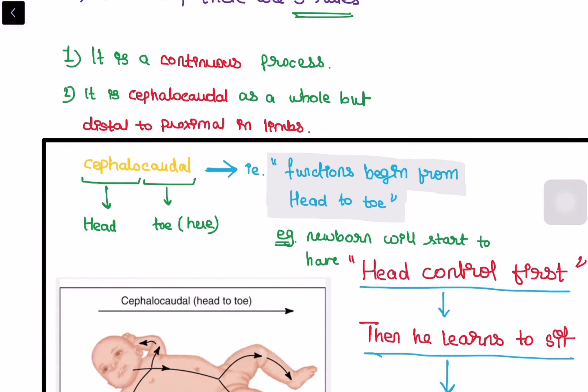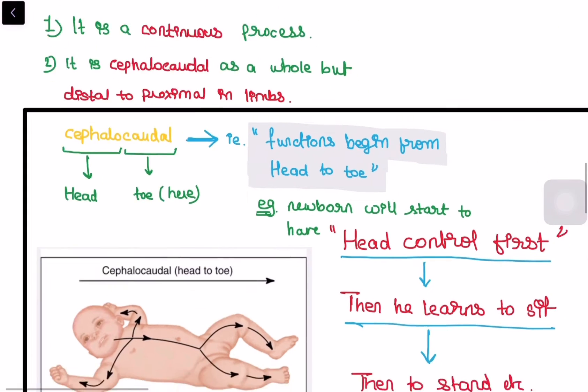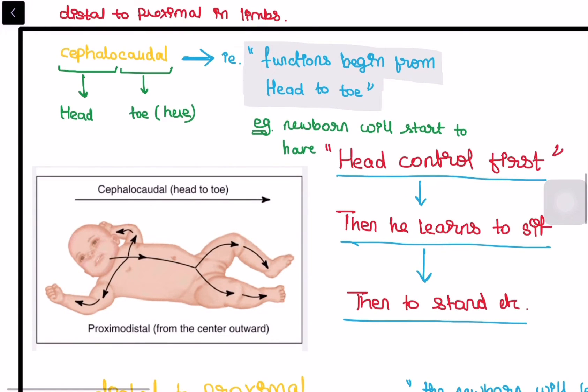Now for example, newborn will start to have the head control first, then he will learn to sit, then he will learn to stand, etc. So the functions will develop from head to toe in a cephalocaudal fashion.